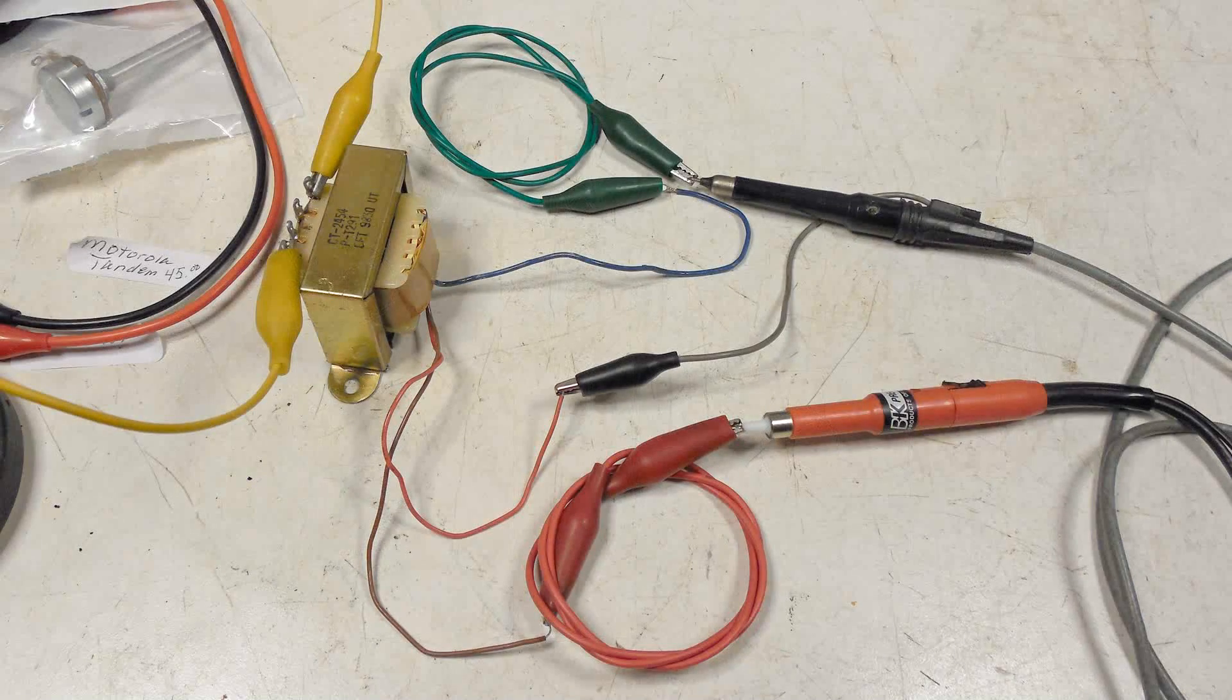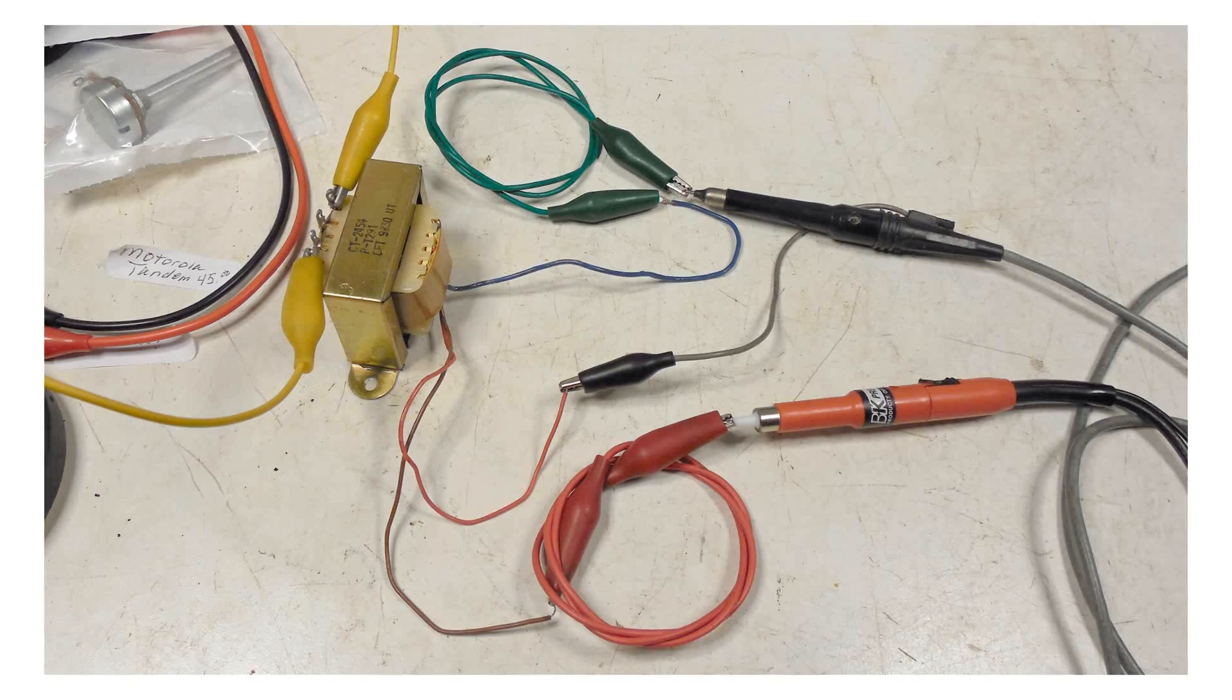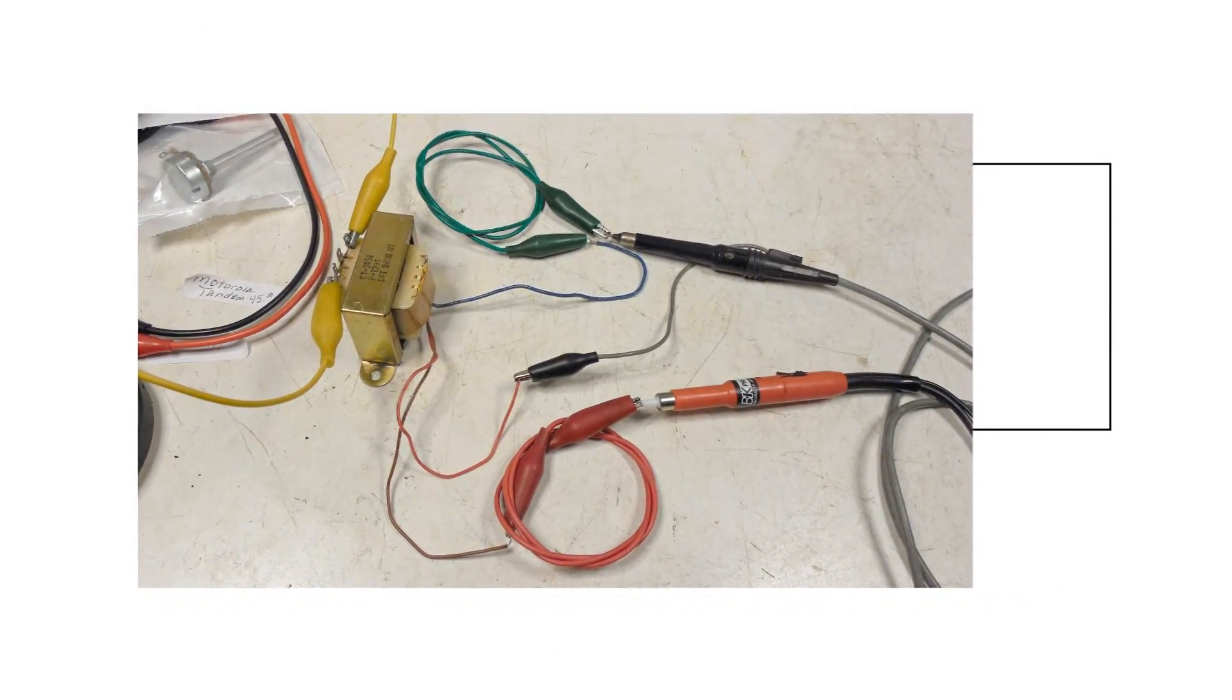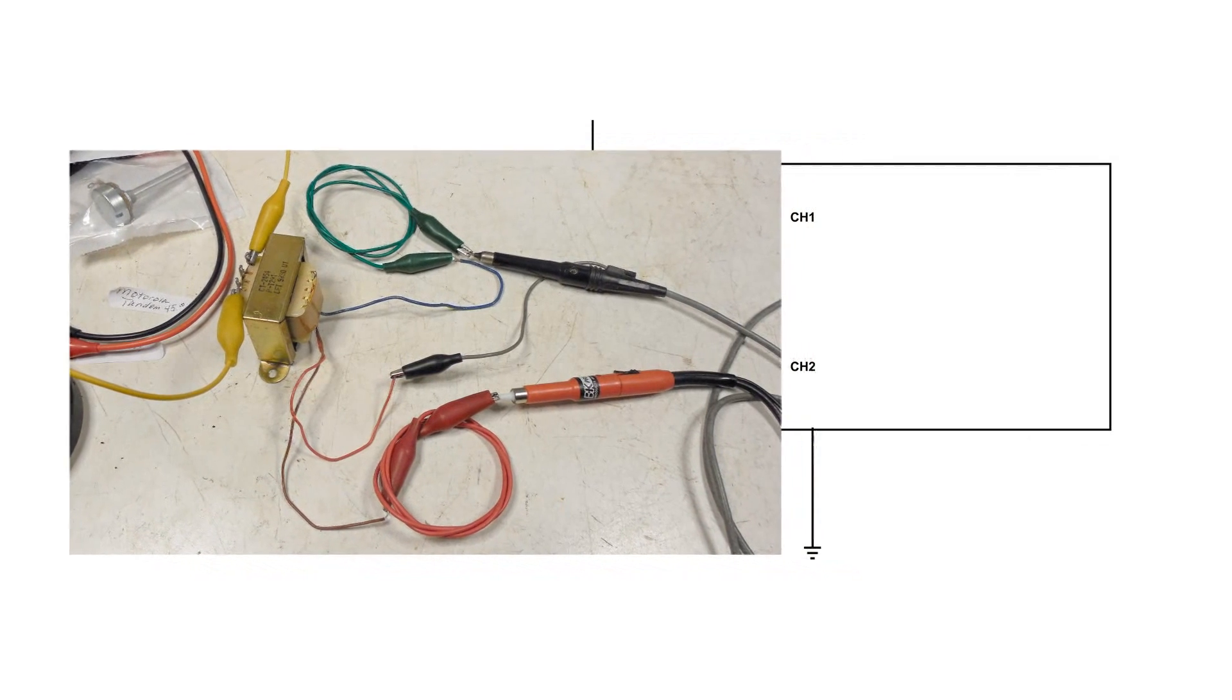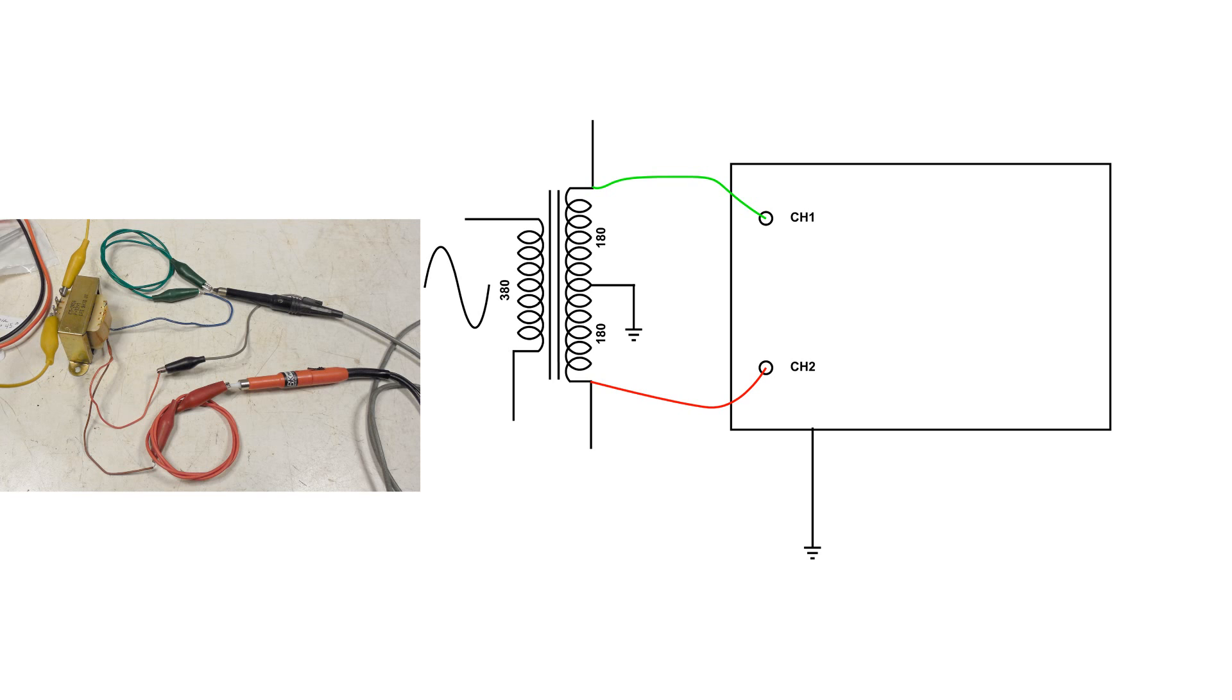So I put a transformer very similar to this one on the workbench and hooked up a signal source to the primary. That's the yellow wires. And then on the secondary, I have that center tap going to the ground of the oscilloscope. And the top green lead is going to channel 1 and the bottom red lead to channel 2.